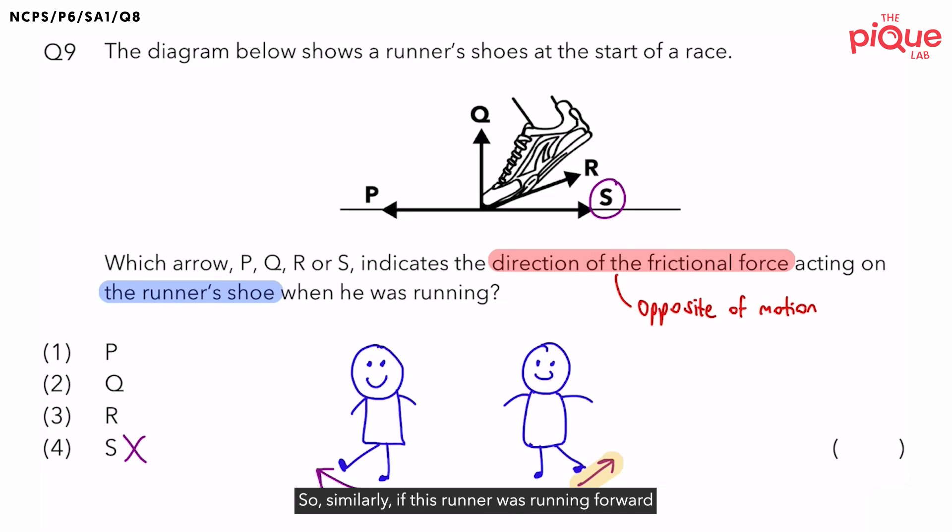So, similarly, if this runner was running forward towards the left, how should he kick his shoe? Is he going to kick it forward or backwards? He's going to kick it backwards. So, I'm going to draw this out. We know that the motion of the shoe should be towards the right.